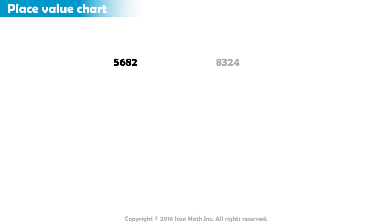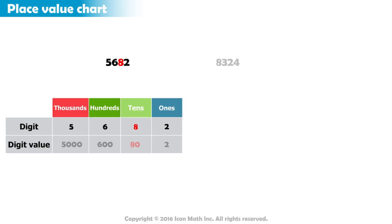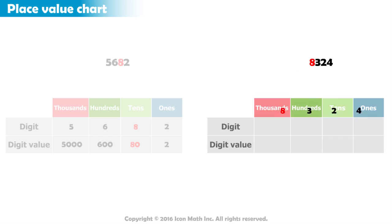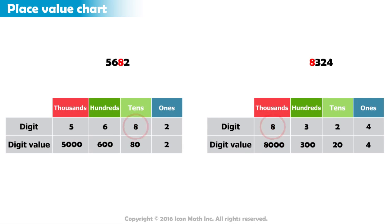Notice the number 5,682 has digit 8 in the tens place with a value of 80, while the number 8,324 has digit 8 in the thousands place with a value of 8,000. We can see that the same digit could have different values depending on its position in the number.